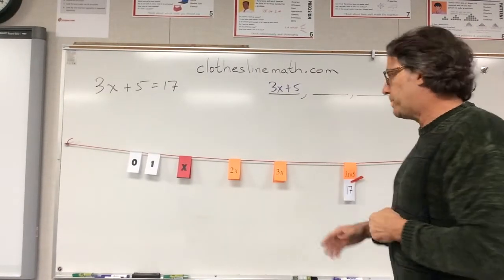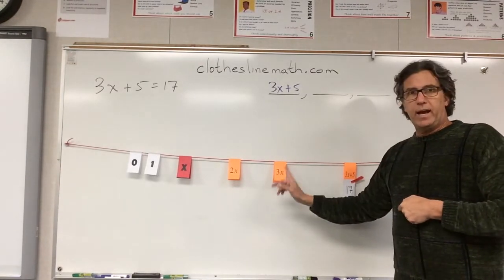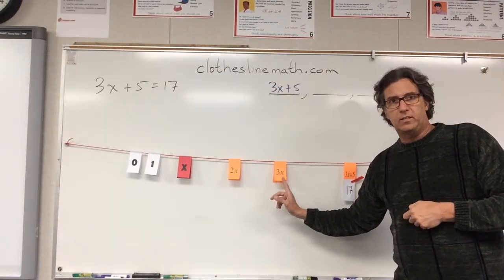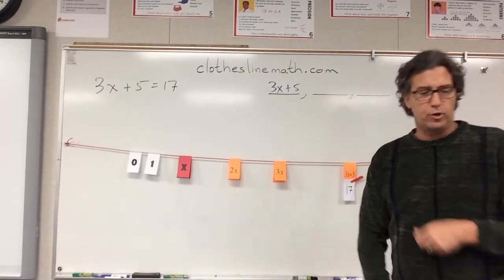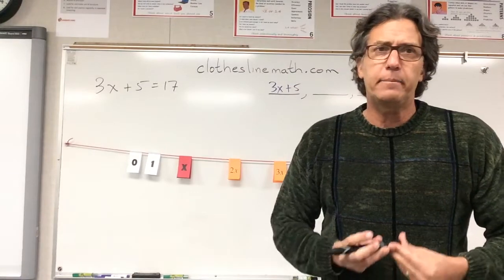And the question then is, what is x? Let's work our way backwards. We had 3x plus 5, 17. We went to 3x. Class, what would this number be? I want you to write that on your clothesline. Hold up your boards, please, class. Let me see.